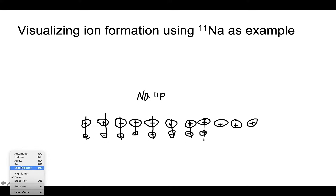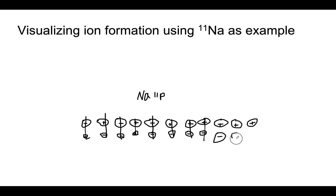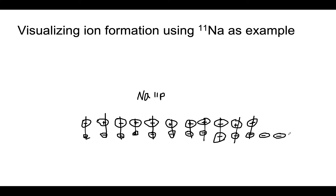Now let's do an example where we gain an electron. If this atom gains one electron, it has a charge of negative one. What if it gains two electrons? That's a charge of negative two. What if it gains three electrons? That's a negative charge of three.